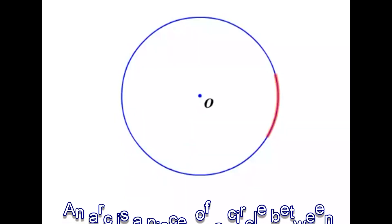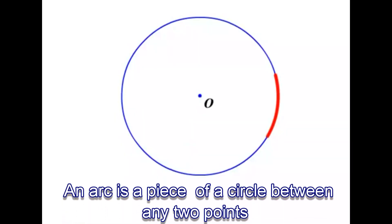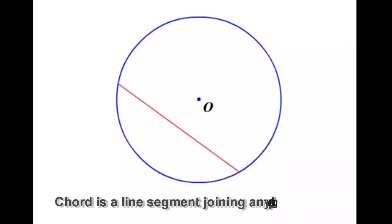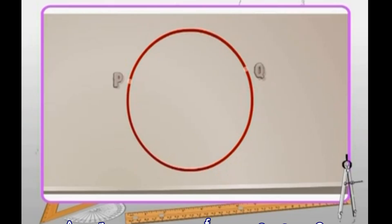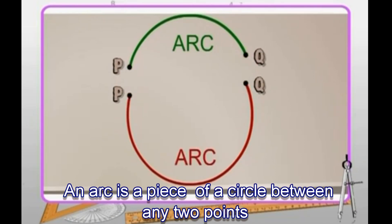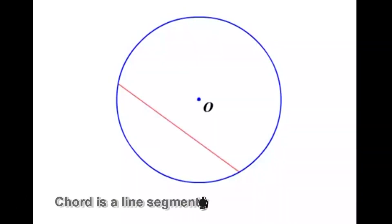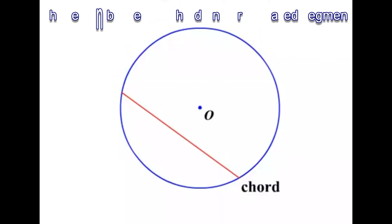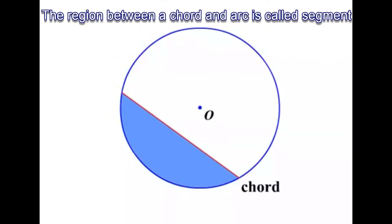An arc is a piece of a circle between two points. A chord is a line segment joining two points on the circle. The region between a chord and an arc is called a segment.